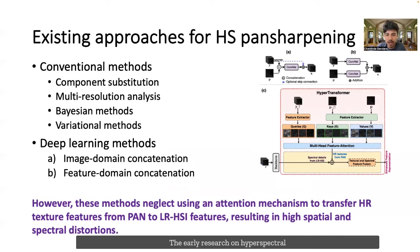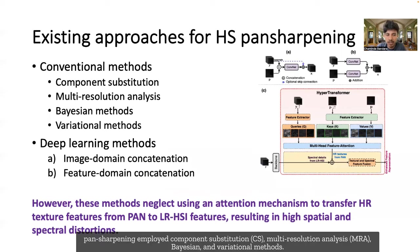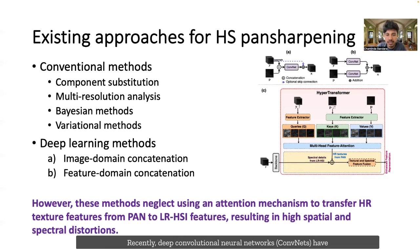The early research on hyperspectral pan-sharpening employed component substitution, multi-resolution analysis, Bayesian, and variational methods. Recently, deep convolutional neural networks have also been introduced for pan-sharpening.